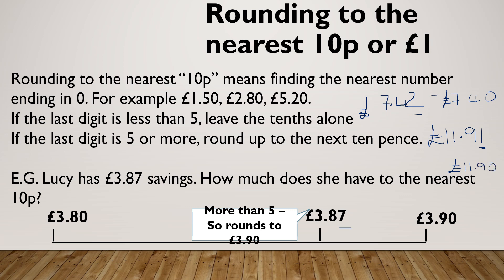Let's do one more. If I was rounding £32.37, because that's a 7, it would round to £32.40.